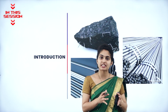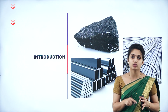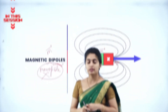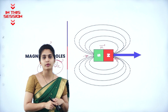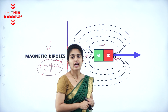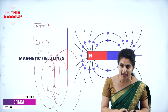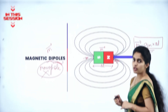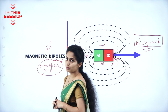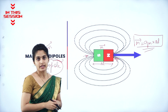The material which attracts other materials was called magnetite. Magnets don't exist with monopoles — it is always the dipole concept. The materials attracted by a magnet are called magnetic materials. The magnetic dipole moment is defined as the product of charge with respect to the length between the poles.